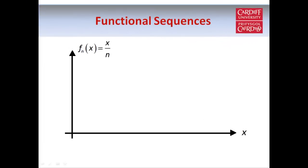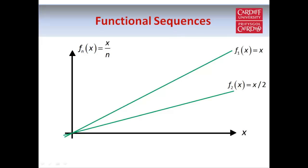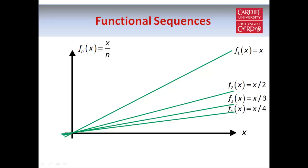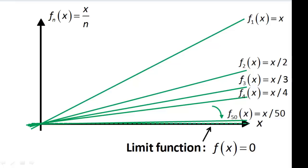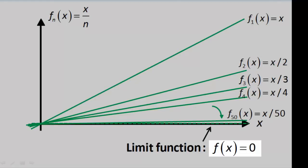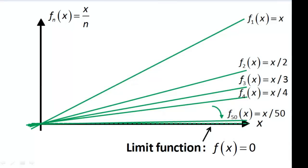If we draw a diagram of our functional sequence: f_1(x) equals x is a straight line, f_2(x) equals x over 2 is also a straight line but not as steep, and if we keep going, f_3(x), f_4(x), and so on are straight lines which become less and less steep. Jumping forward, f_50(x) is almost horizontal. So as n gets larger and larger, these functions get closer to matching the zero function — a constant function which always takes the value 0 for any x. We say that the constant function f(x) equals 0 is the limit function of the sequence.